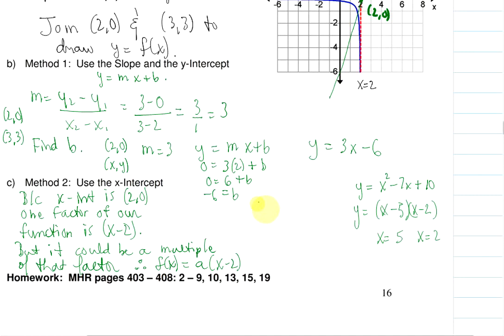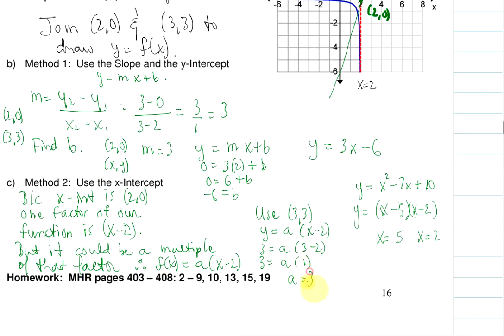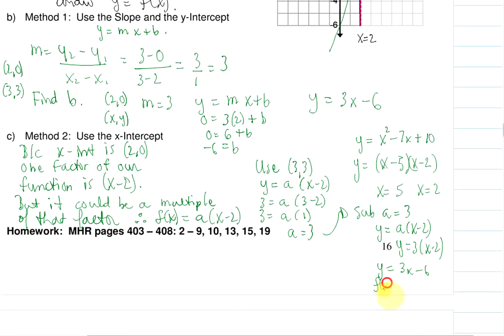We're going to use the point (3, 3) and plug it into y equals a times (x minus 2). Putting 3 in for y and 3 in for x, we get 3 equals a times 1, so a equals 3. Substituting a equals 3 into y equals a times (x minus 2) and expanding, we get 3x minus 6. So f of x equals 3x minus 6. And that's it — the end of section 7.4.